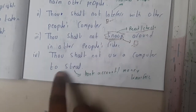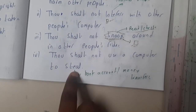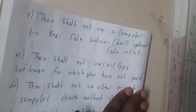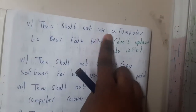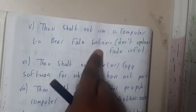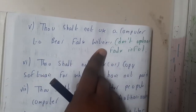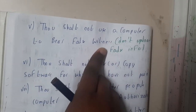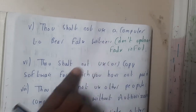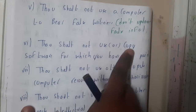The fourth commandment: do not use a computer to steal data — never copy your friend's files and such things. The fifth: do not use a computer to bear false witness, meaning do not fake things with the help of a computer. Computers can remember everything, so do not fake it.